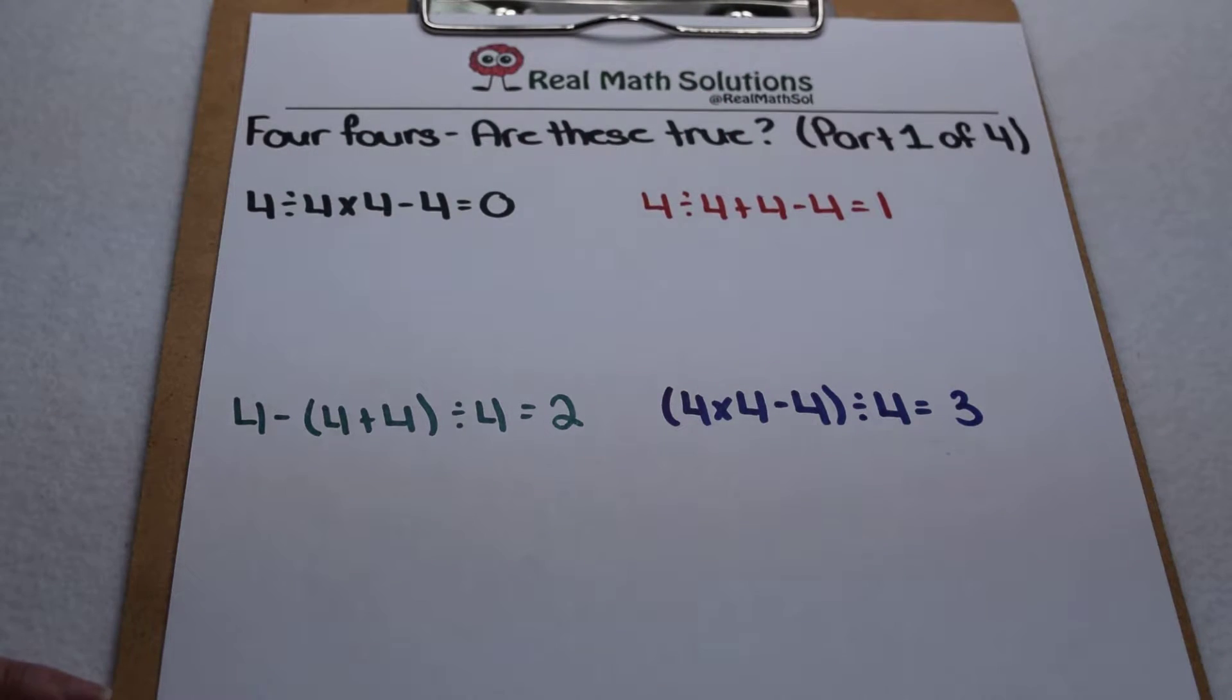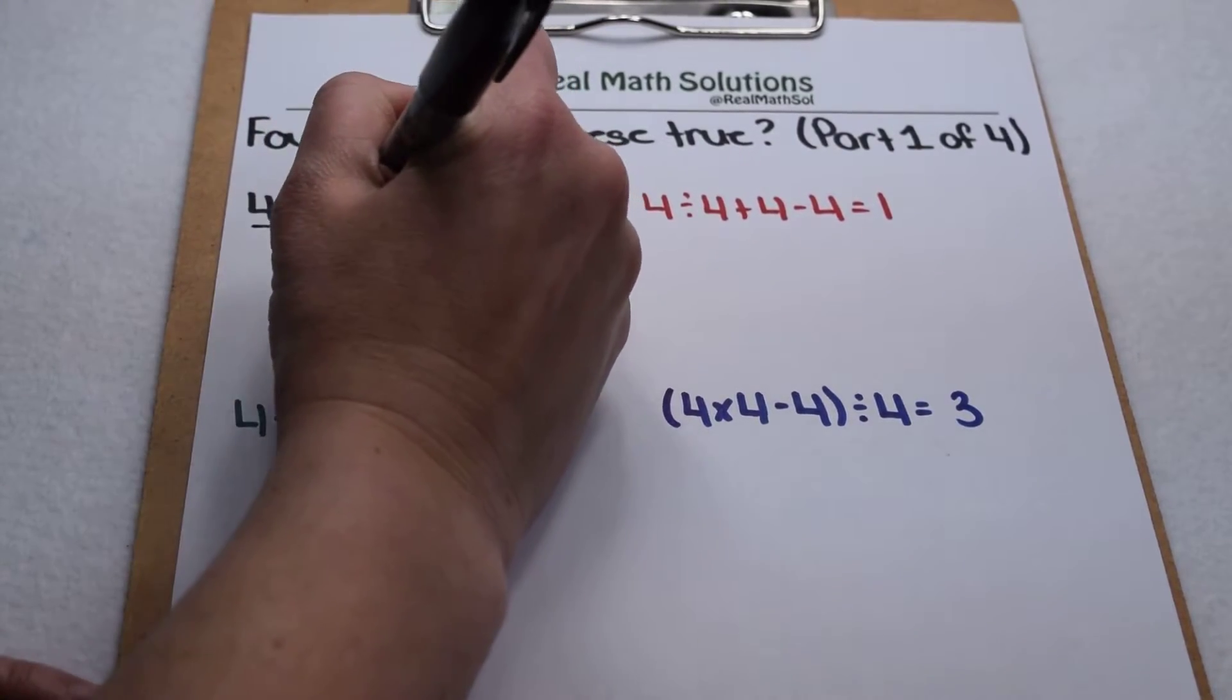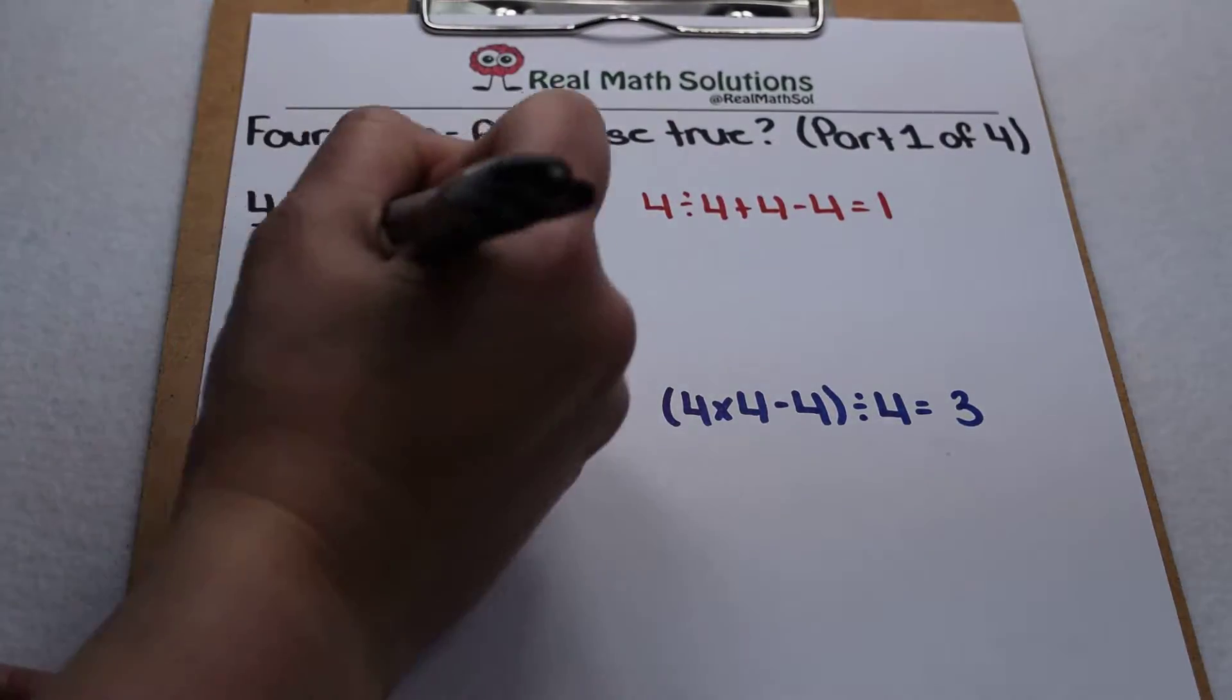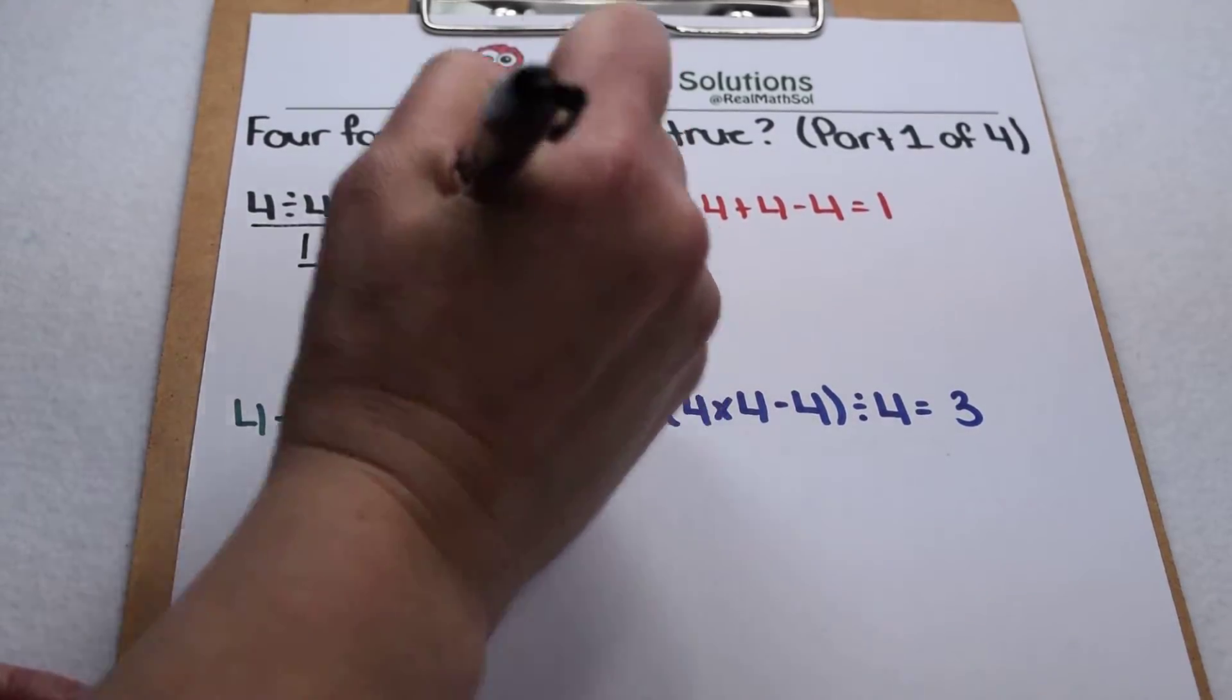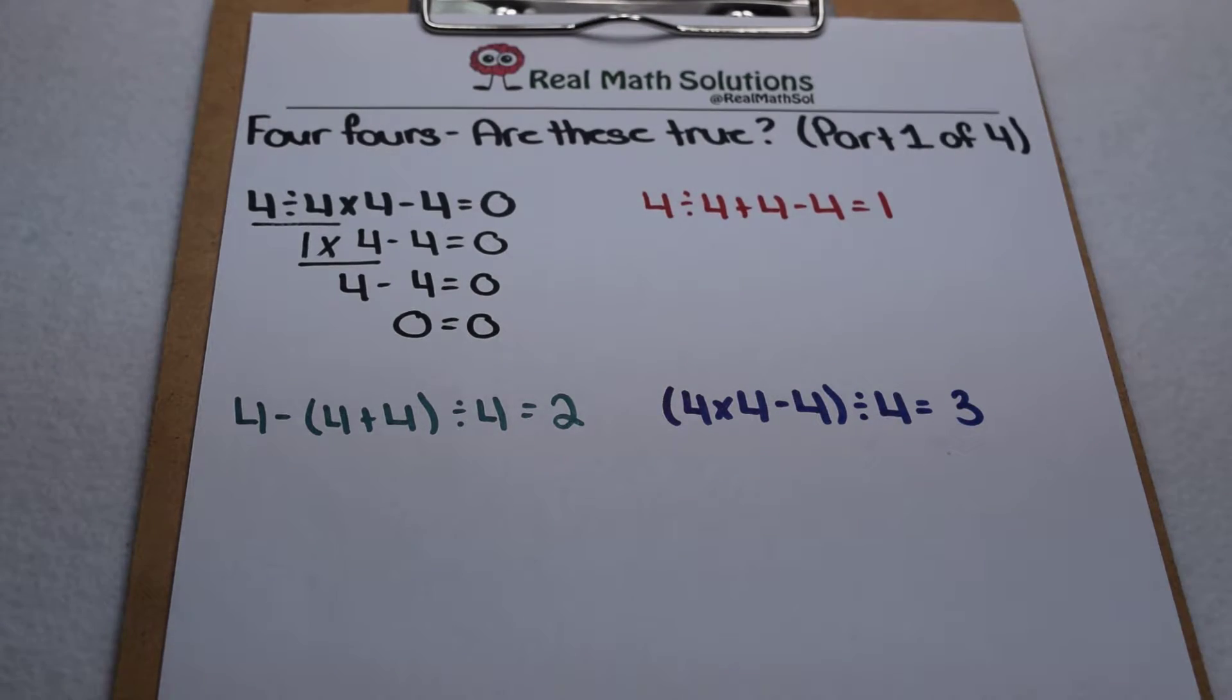Order of operations tells us we need to multiply and divide from left to right. So four divided by four is one, so that leaves us as one times four minus four. Now we're going to multiply, one times four is four, so that leaves us with four minus four. Four minus four is zero, so zero equals zero. That one works.